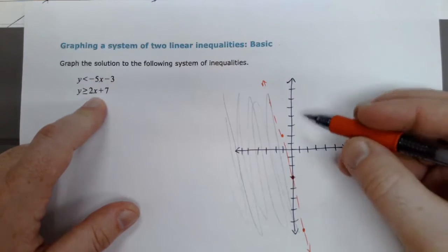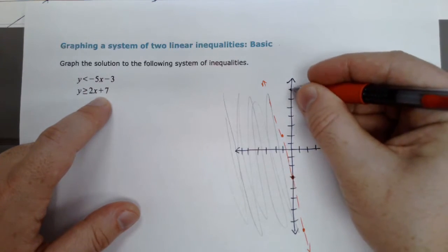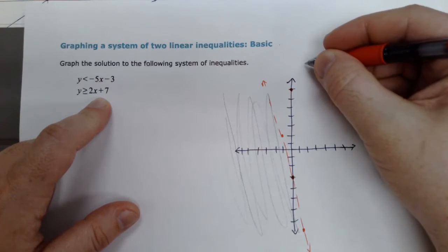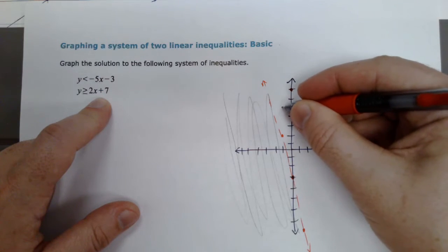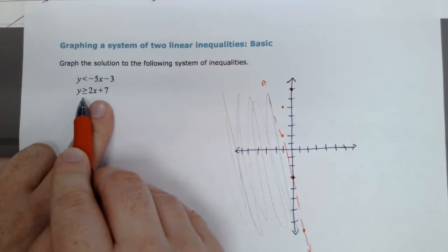Now, I'm going to go ahead and do this one. I'm going to start at 7, and I'd normally go up 2, and then right 1. I'm going to run out of room, so I'm going to go to the opposite and go down 2 and left 1. This one is a solid line. Notice there is an or equal to there.